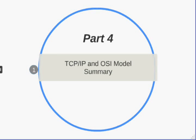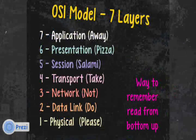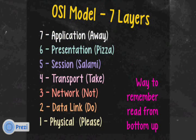Hi, this is Eugene Blanchard of telecomworld101.com. This is part four of the TCP/IP and the OSI model series. This is the summary version — you can think of it as the fast track version. So let's do a summary here.